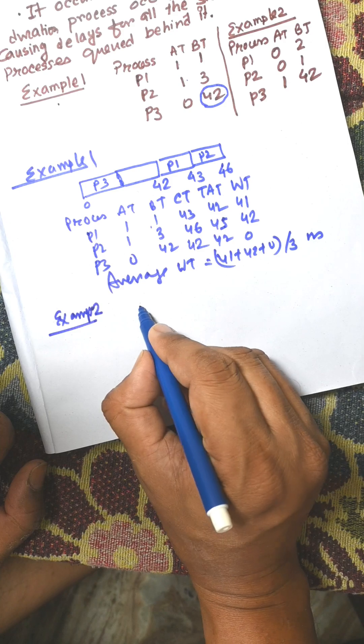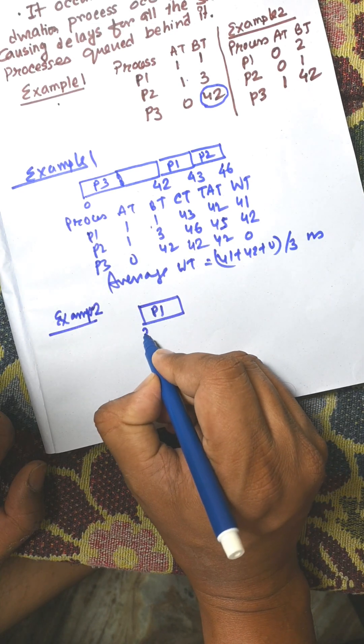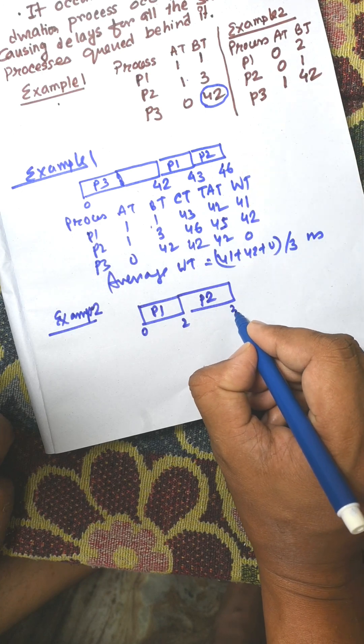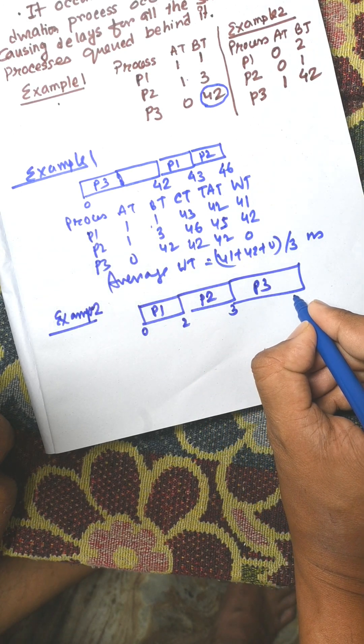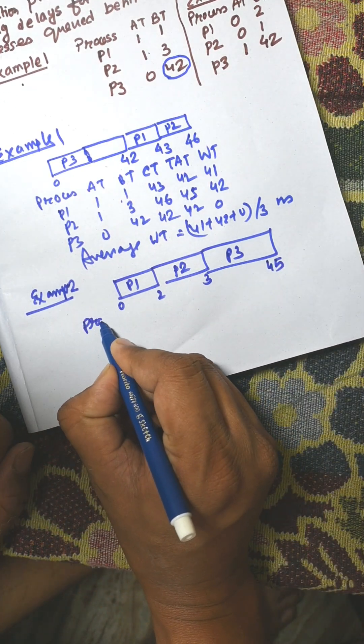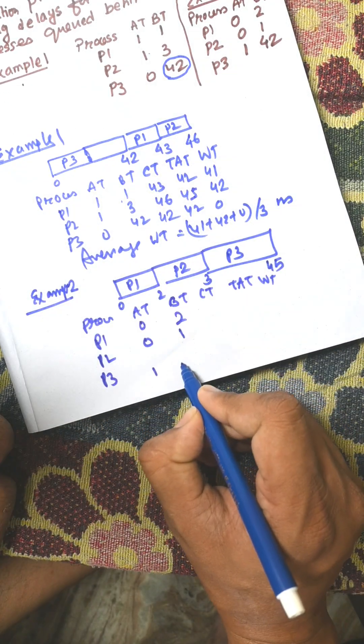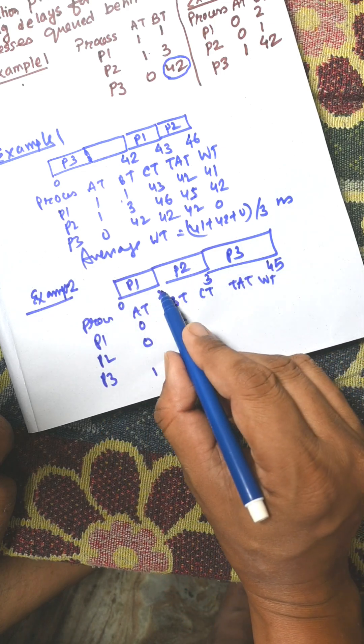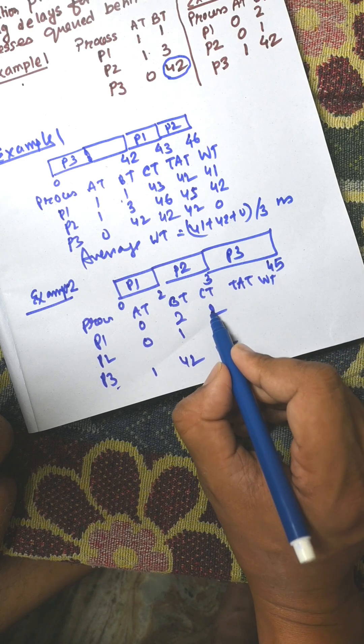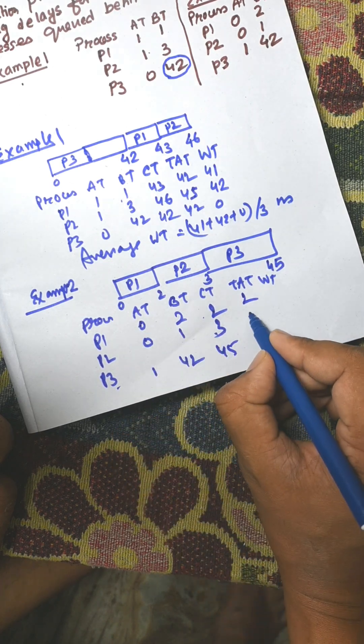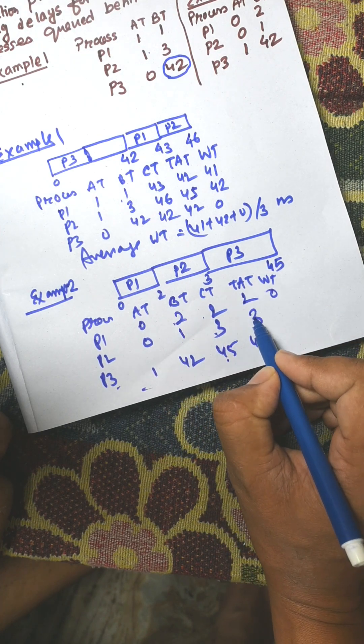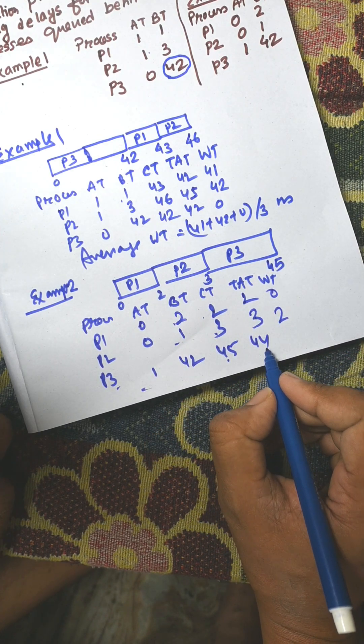In FCFS, P1 arrives first and will be selected with burst time 2. P2 is selected next with burst time 3, and finally P3 is selected, completing at 45. Completion times: P1 is 2, P2 is 5, P3 is 45. Turnaround time equals completion time minus arrival time: 2 minus 0, 5 minus 1, 45 minus 0. Waiting time equals turnaround time minus burst time, giving 0, 2, and 3. The average waiting time reduces to 0 plus 2 plus 3 divided by 3.